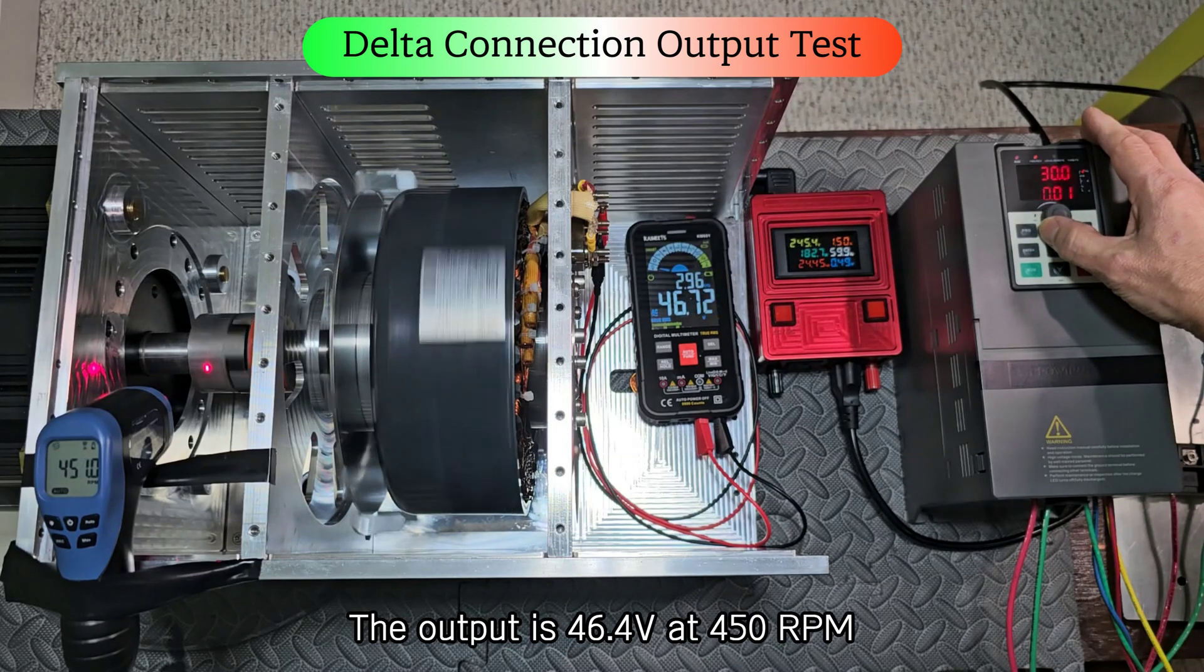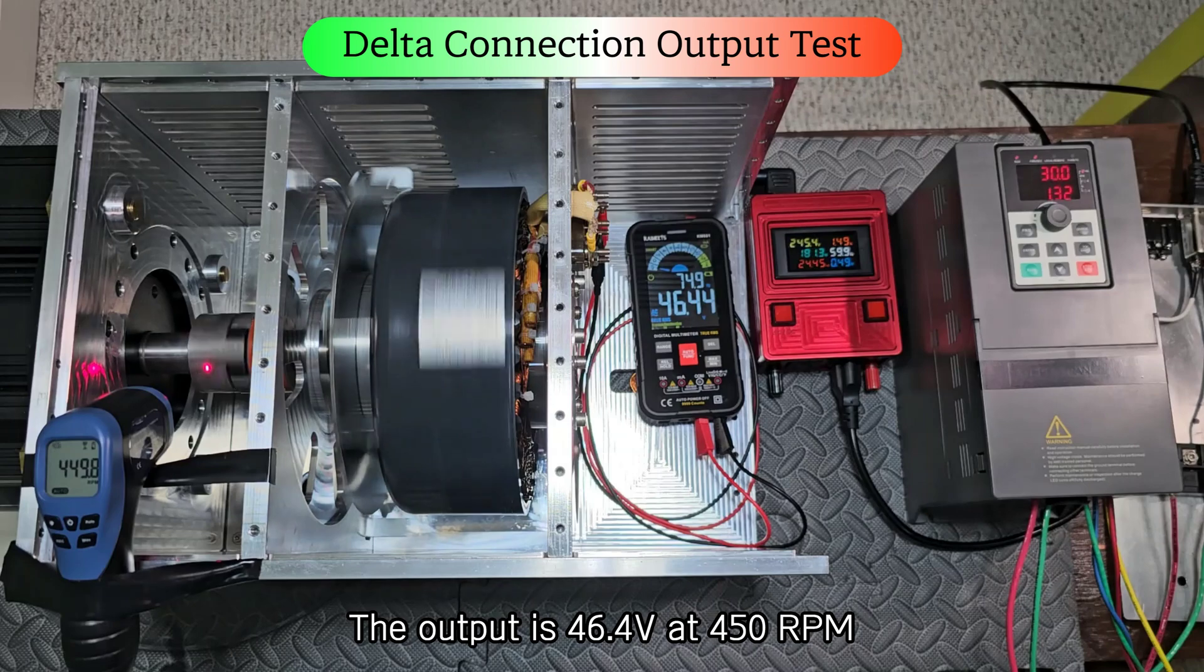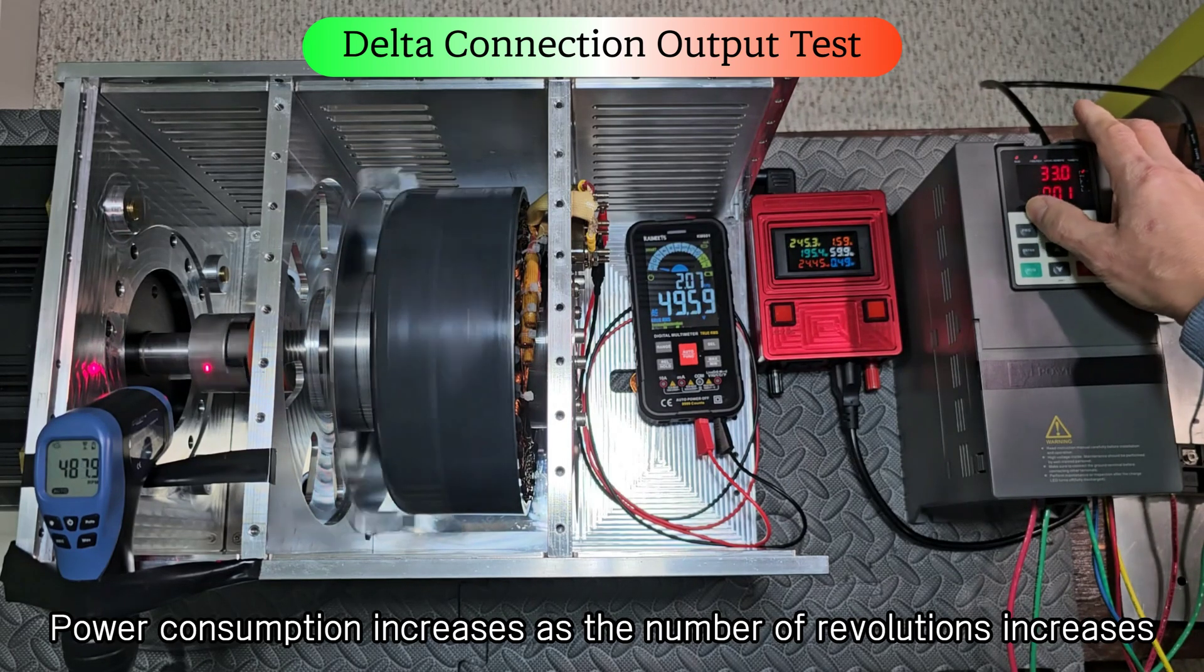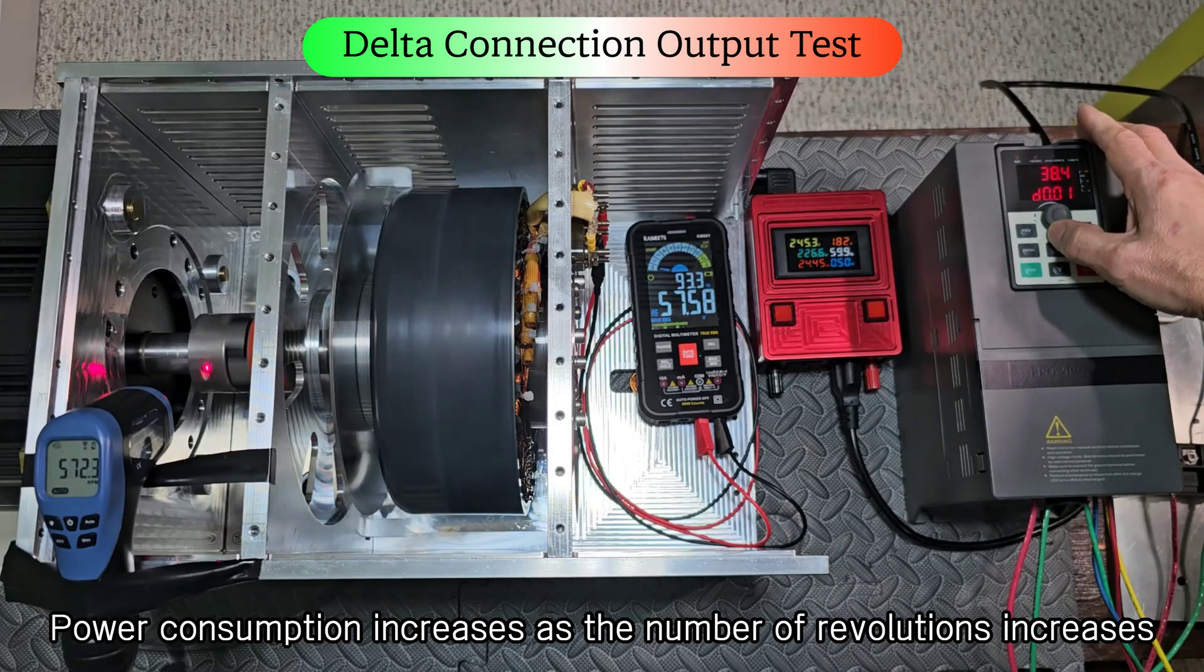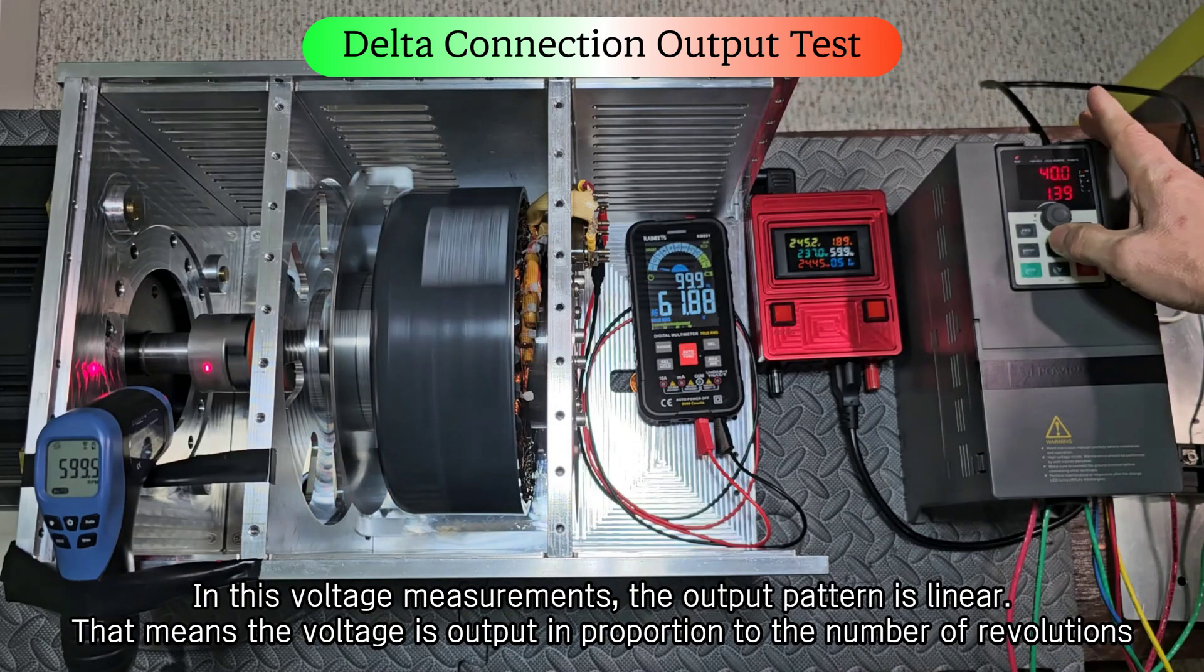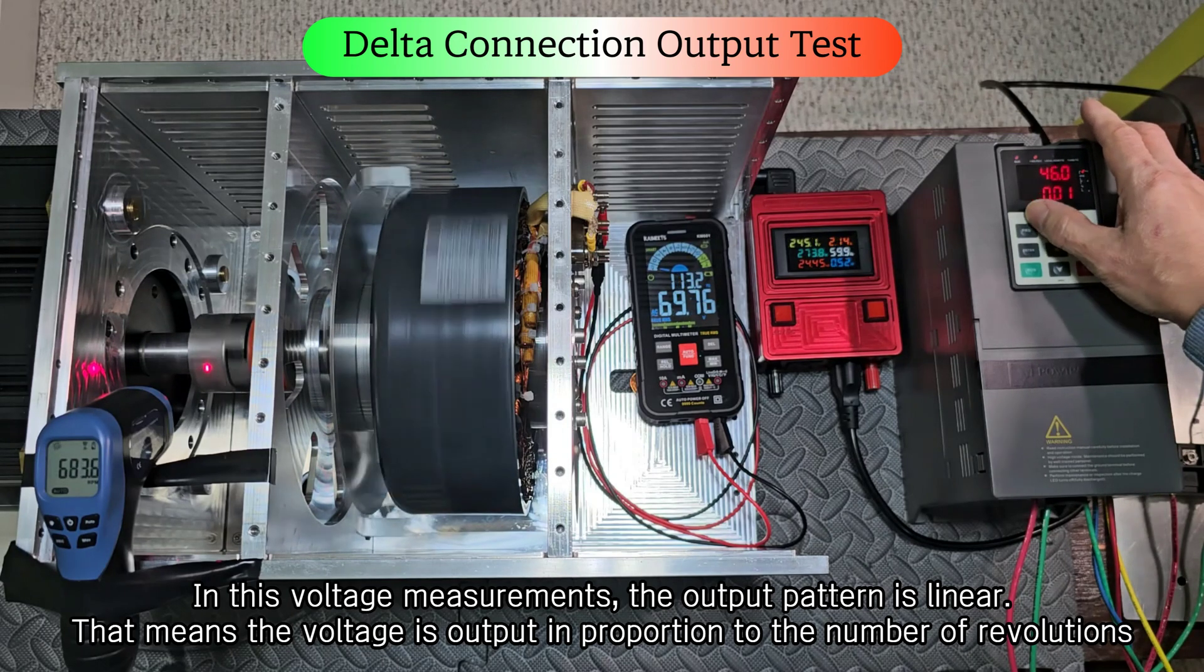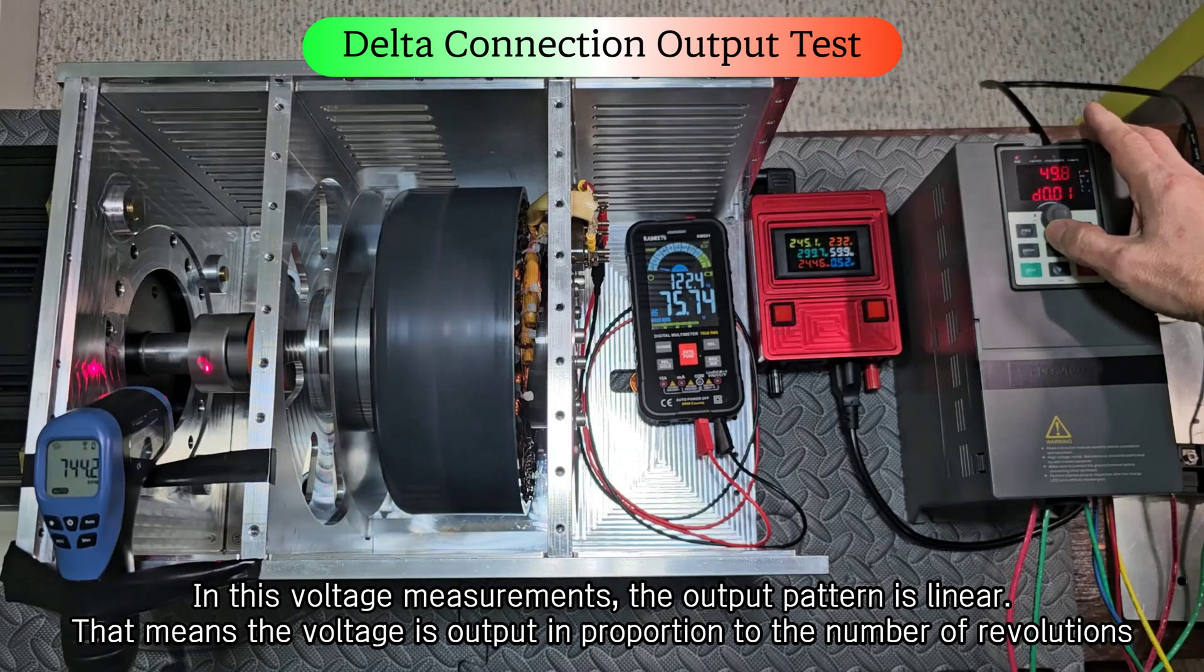The output is 30.86 volts at 300 RPM, 20 hertz. Next target frequency is 30 hertz. The output is 46.4 volts at 450 RPM. Power consumption increases as the number of revolutions increases. The output is 61.9 volt at 600 RPM. In this voltage measurements, the output pattern is linear. That means the voltage is output in proportion to the number of revolutions.